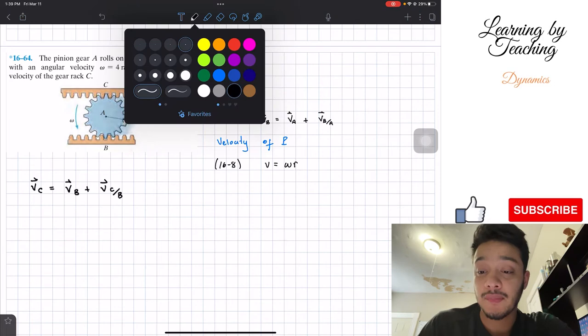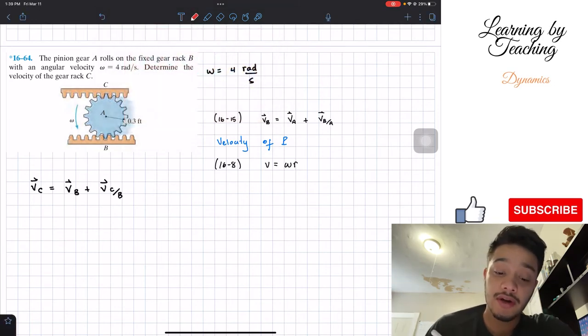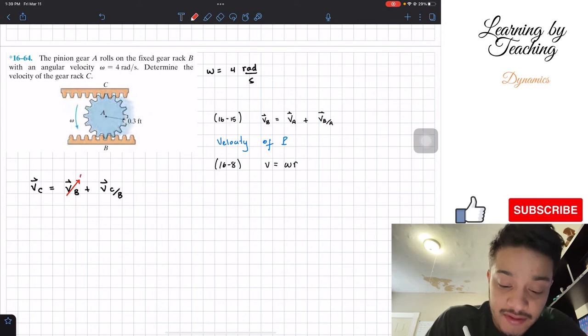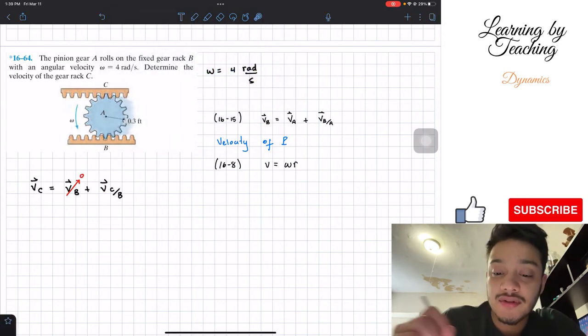The first thing I want to point out in our equation is that the velocity of B is equal to 0.